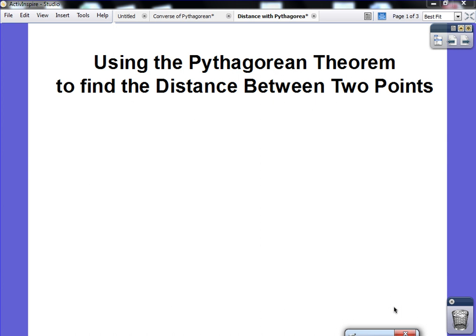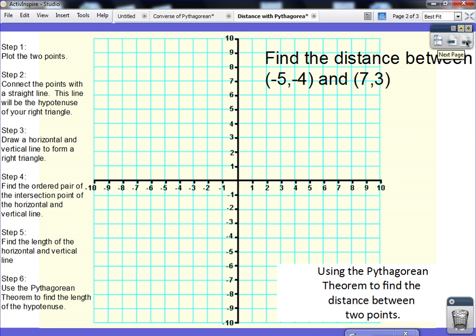In this video, we are going to take a look at using the Pythagorean Theorem to find the distance between two points. So, for example, let's say I want to find the distance between the point (-5, -4) and the point (7, 3).